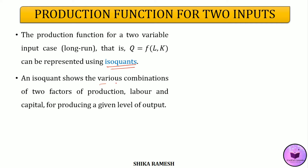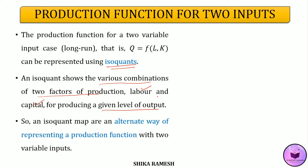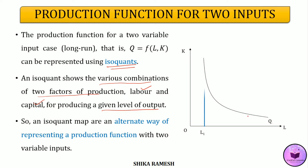An isoquant shows the various combinations of two factors of production — labour and capital — for producing the same level of output. In the diagram, output Q is represented by the isoquant, and that level of output can be produced using varying proportions of labour and capital. Two combinations are shown, denoted as points A and B. At point A, more capital and less labour is used; at point B, more labour and less capital is used. Point A clearly shows a capital-intensive production method and point B shows a labour-intensive technique.